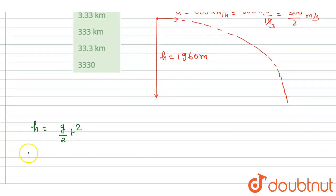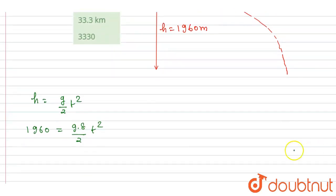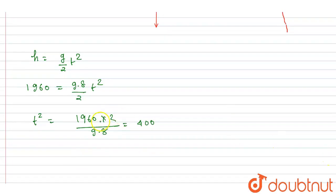h is this and g is 9.8, so g by 2 times t squared. If you solve it, t squared equals 1960 times 2 by 9.8, which will be 400. It will equal 400. If you see, this will get canceled out by 200 and this will be 400. From here you will get the time equals 20 seconds.